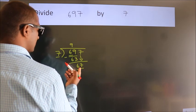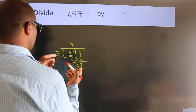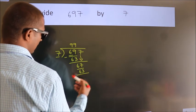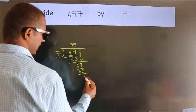A number close to 67 in the 7 table is 7 nines, 63. Now we subtract. We get 4.